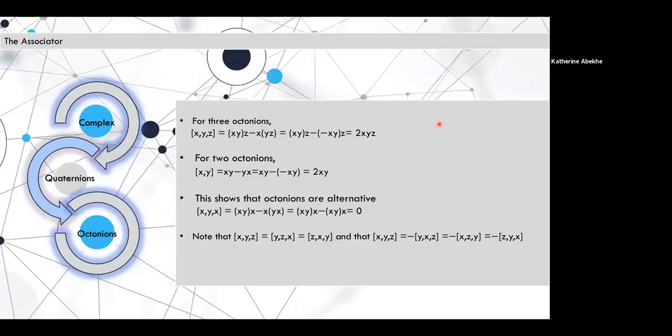So here we show the associator for three octonions. It's going to be (xy)z minus x(yz), which will give you 2xyz since the octonions aren't associative. For two distinct octonions, the associator is zero. Since the octonions are alternative, we would actually get zero with the associator of algebras that are associated right here.